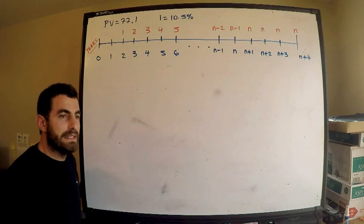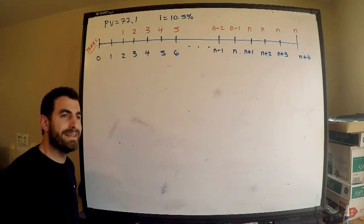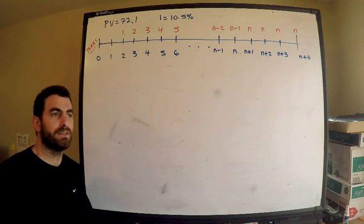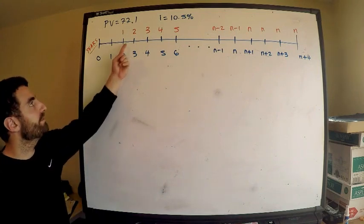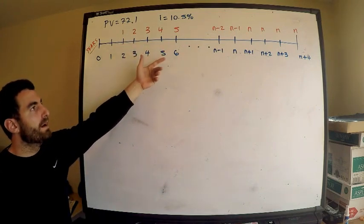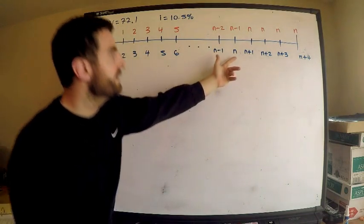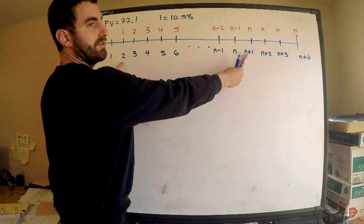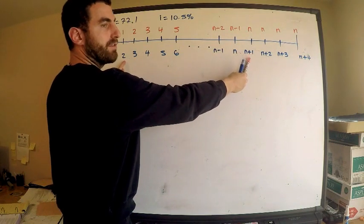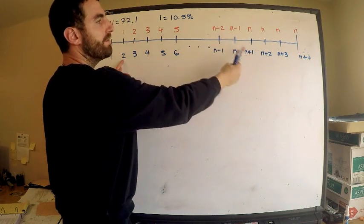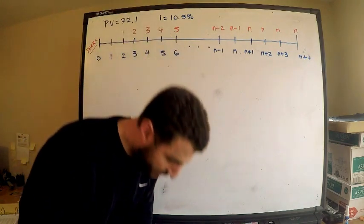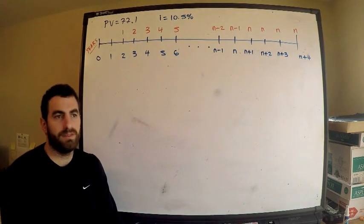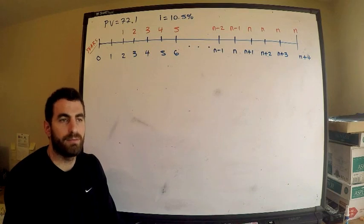The way to think about this is that we have an annuity with payments in arithmetic progression, because the payments are increasing by one through n periods. It is n periods because we start at two, so n plus one minus one gives us n. That's why there are n payments increasing by one — that's called an arithmetic progression regarding the payments.